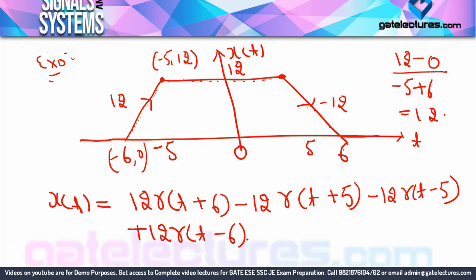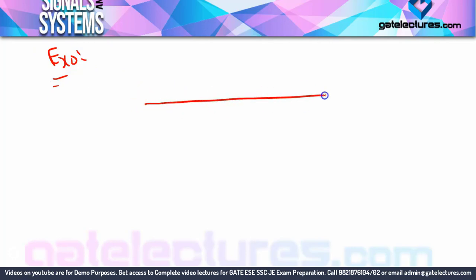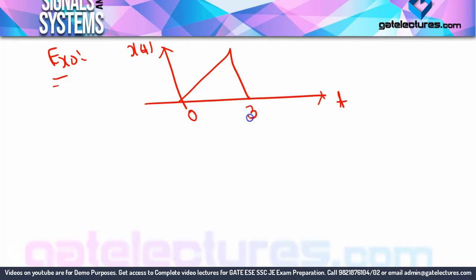So when a signal has both sloped sections and vertical drops, you need both ramp functions (to control slope) and step functions (to control amplitude jumps). This combination approach is used whenever the figure has a vertical discontinuity. The complete representation requires careful analysis of slope changes and amplitude jumps separately.